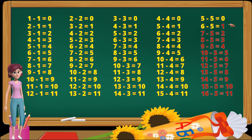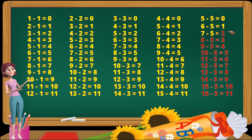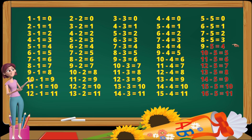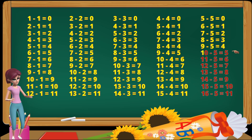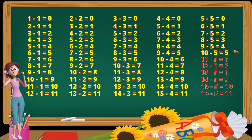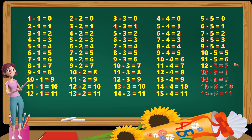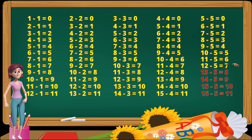6 minus 5 equals 1. 7 minus 5 equals 2. 8 minus 5 equals 3. 9 minus 5 equals 4. 10 minus 5 equals 5. 11 minus 5 equals 6. 12 minus 5 equals 7.